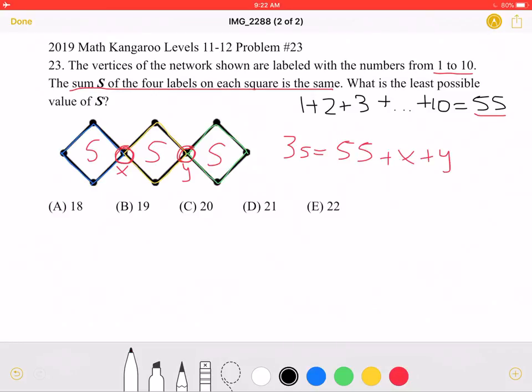Well, we know that this must be a multiple of 3, because it is equal to 3s. So we need to think of a multiple of 3 that's closest to, but obviously greater than 55. And that would be 57.